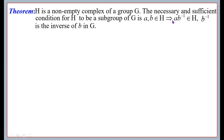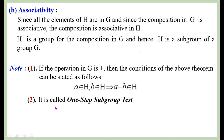So hereafter we need not prove all four axioms — just one condition is enough. To prove a non-empty complex of a group G to be a subgroup of G, only one condition is sufficient: a, b ∈ H implies ab⁻¹ ∈ H for all a, b ∈ H. That is why it is called the one-step subgroup test.